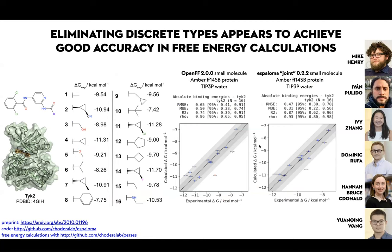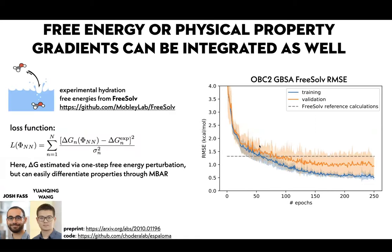If we use Espaloma to apply small molecule parameters — now only possible thanks to biopolymer support for PDB reading from Open Force Field — and just replace the small molecule parameters, it seems to do reasonably well, very competitive with Open Force Field 2.0, maybe slightly better, though we need to try more systems to say with certainty. You can also propagate free energy: anything you can compute and differentiate you can include as a target, and the differentiation is automatic since we're using a machine learning framework.